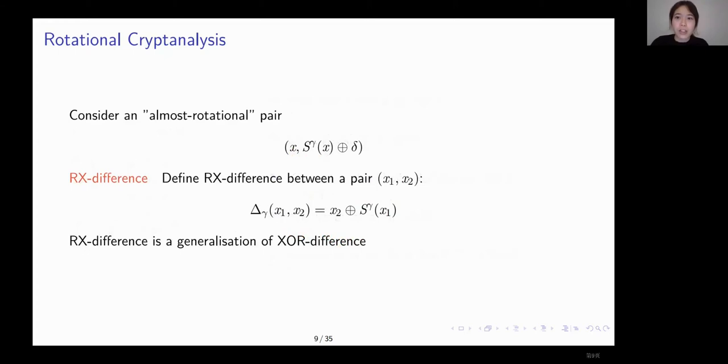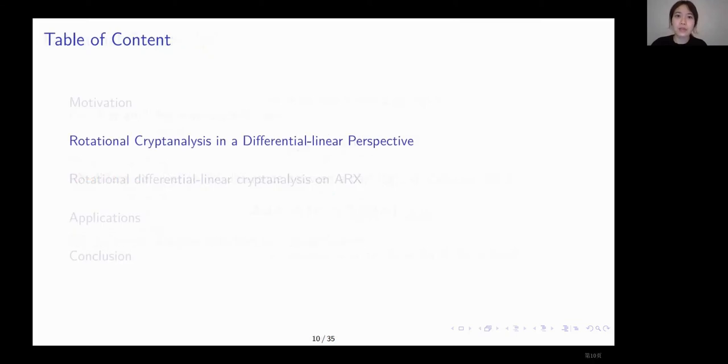The definition of rotational XOR difference is to add a rotation on one operand. When the rotational amount is zero, then it degenerates to ordinary XOR difference. Having the rotational difference in mind, what we do next is to generalize the differential linear cryptanalysis by replacing the XOR difference to rotational difference.